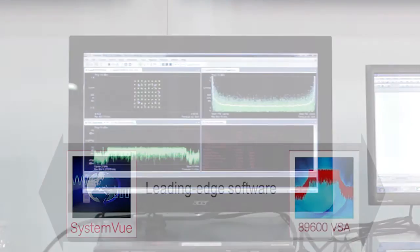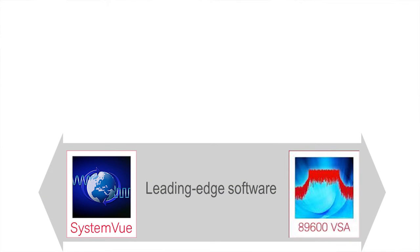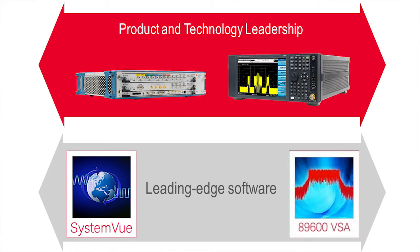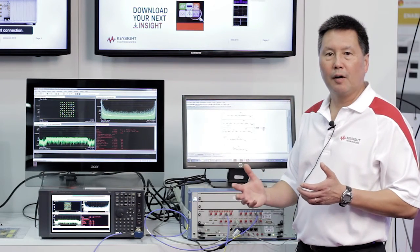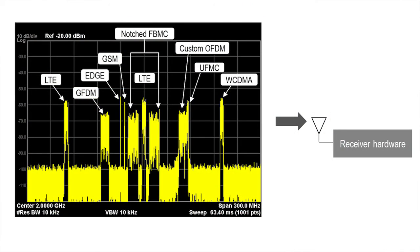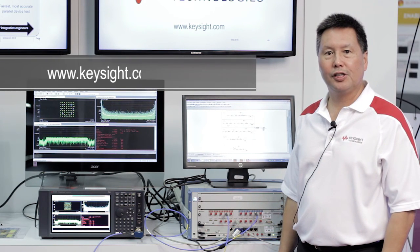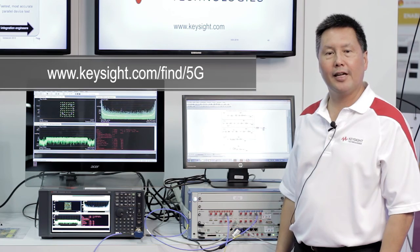The key to this is the flexibility of the software combined with our test equipment in creating different signal scenarios. This could be used in an R&D environment to run what-if scenarios, or to generate signals with different interference scenarios and run those into a receiver to see how it impacts receiver performance. I'd like to thank you for your time — please contact Keysight Technologies for additional information. Thank you.